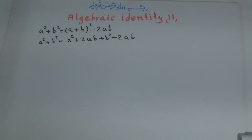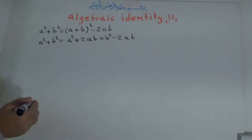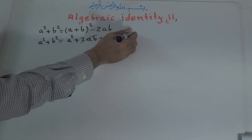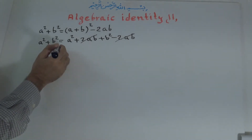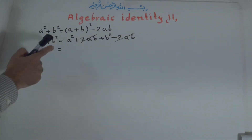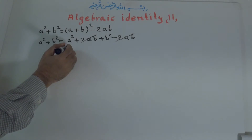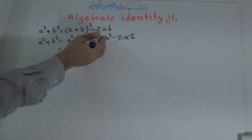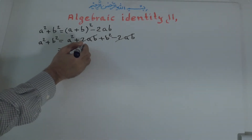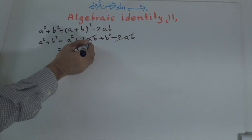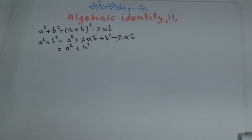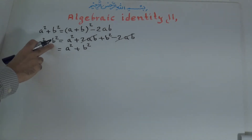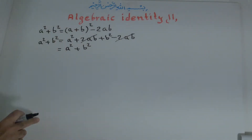Now what can we do? We can cancel positive 2ab with the negative 2ab. What's remaining? There is remaining a to the power of 2 plus b to the power of 2. So we prove that a to the power of 2 plus b to the power of 2 is equal to a plus b all to the power of 2 minus 2ab.